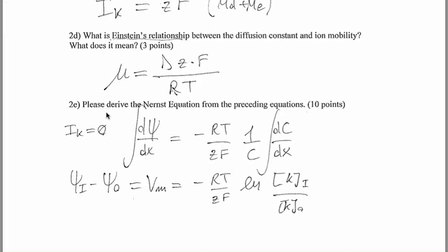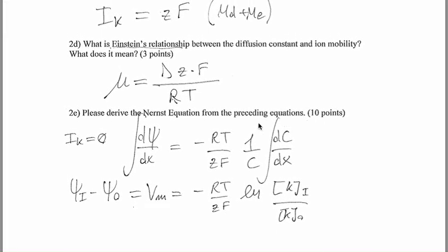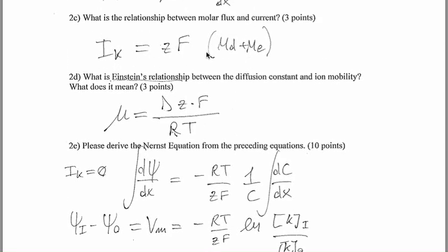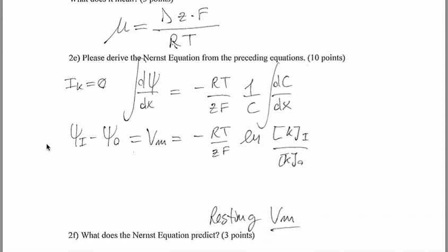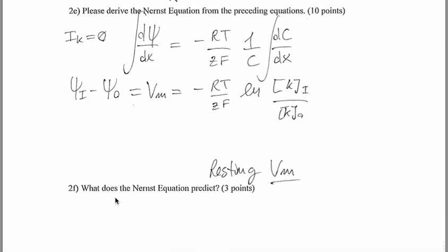Question 2e, derive the Nernst equation from the preceding equation. So, we're going to take the equation from 2c and say that, you know, in equilibrium, we're going to have a current of zero. And we're going to basically solve for both of these two equations, which we're asking 2a and 2b. We're going to integrate on both sides. We're going to obtain the difference of potential between inside and outside, which is minus RT divided by Zf, natural log of the concentration inside by the concentration outside. And what does the Nernst equation predict? It predicts basically the resting potential of the membrane.